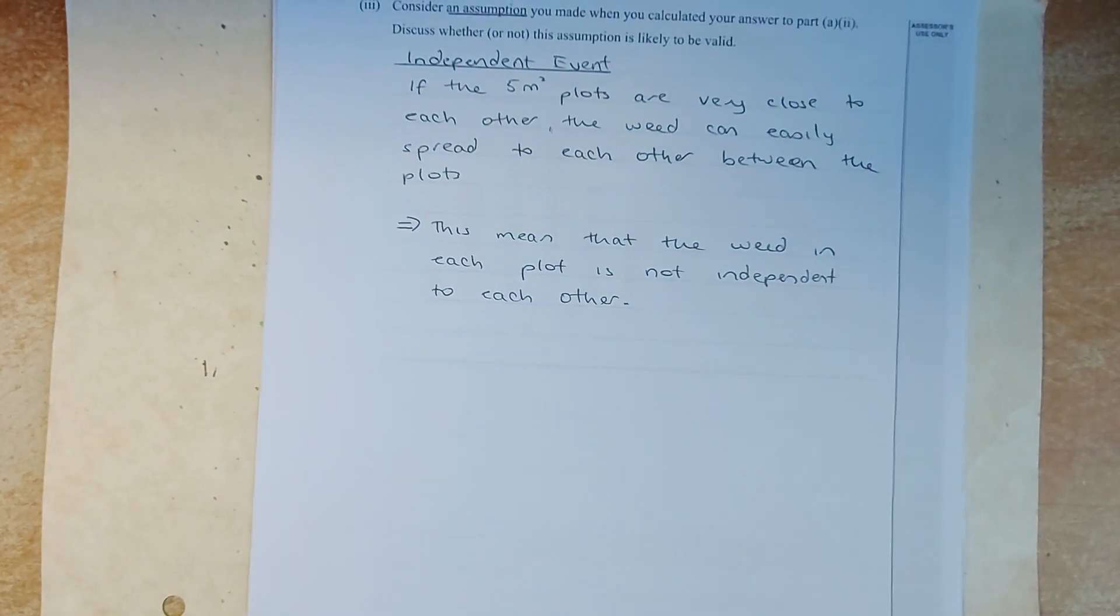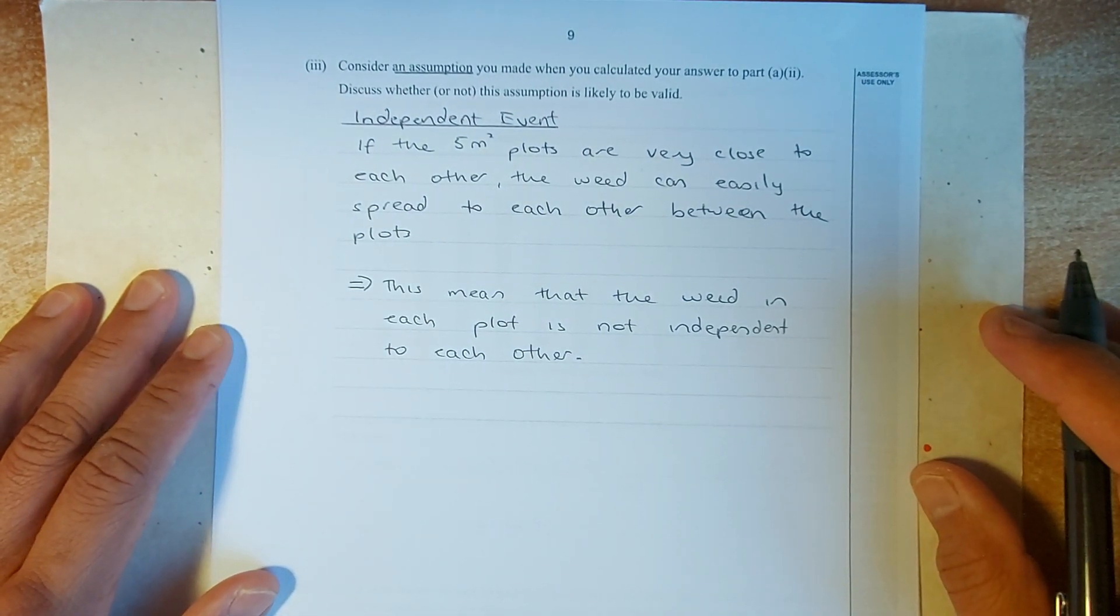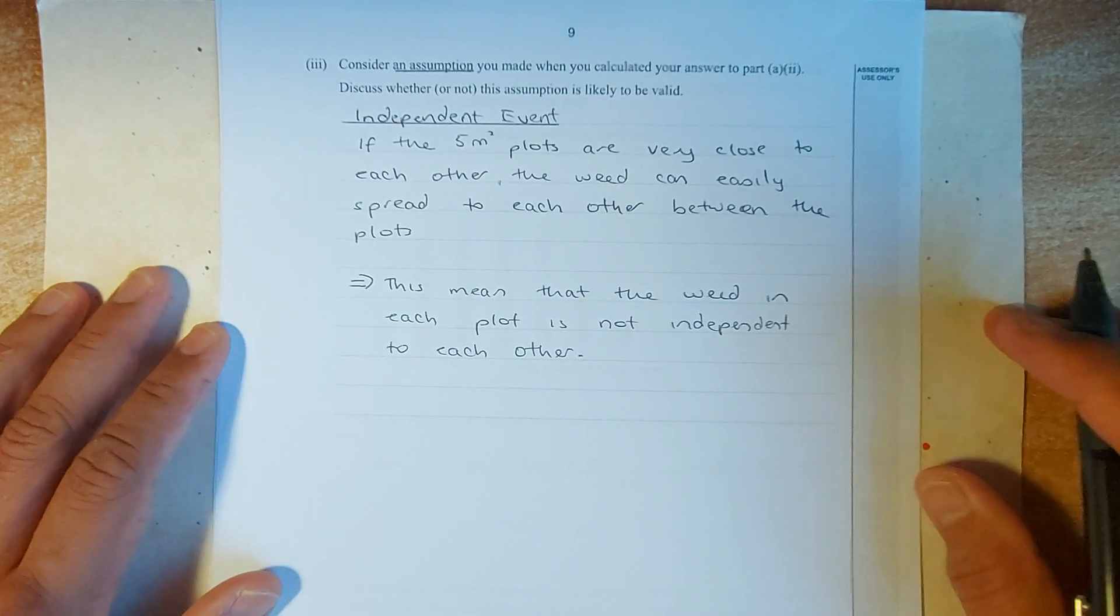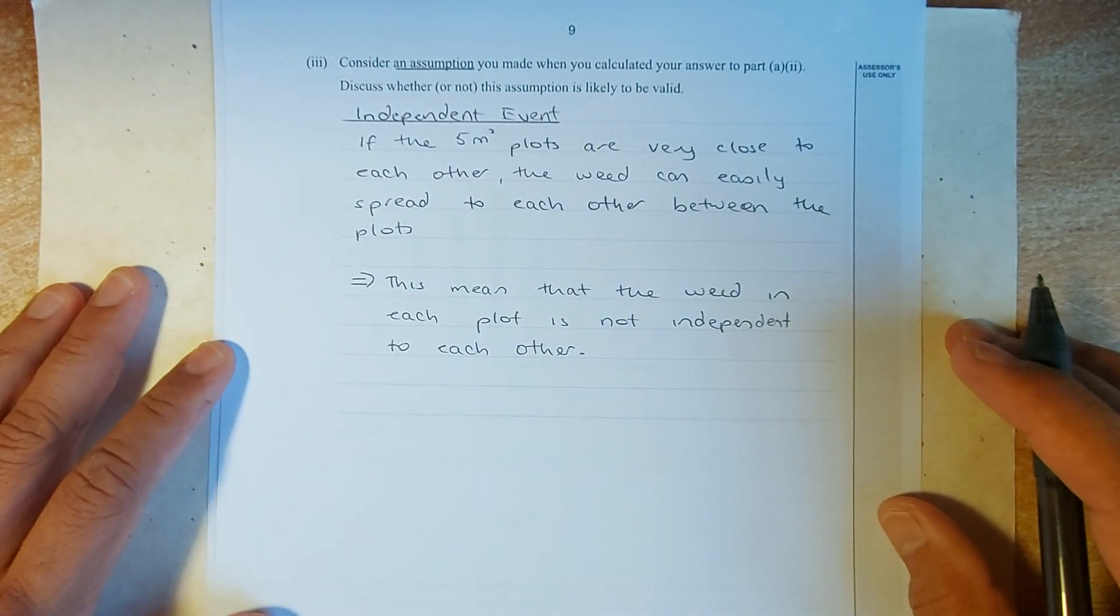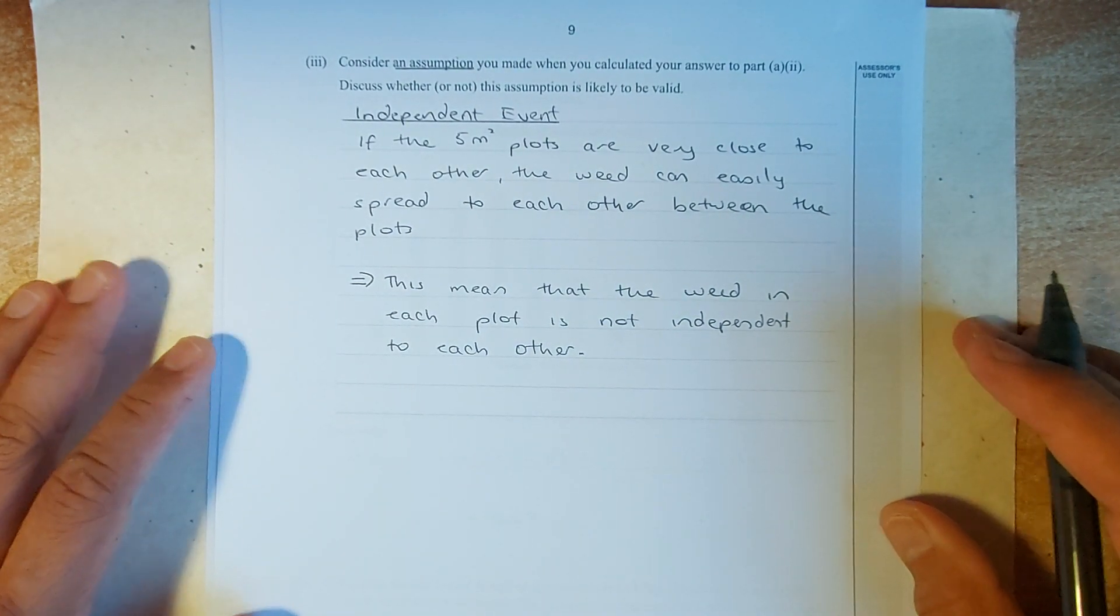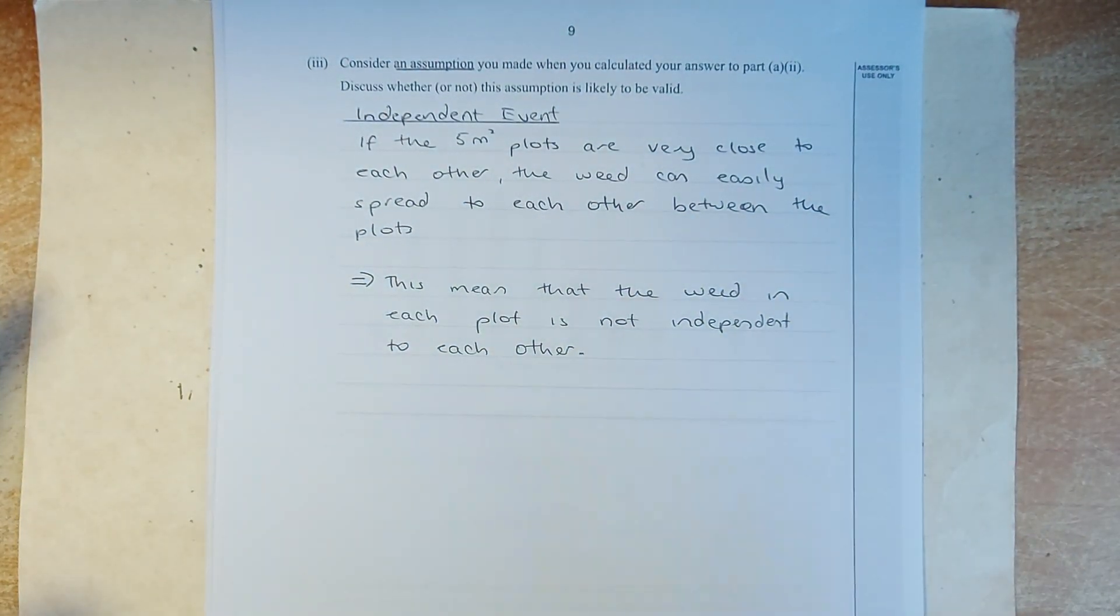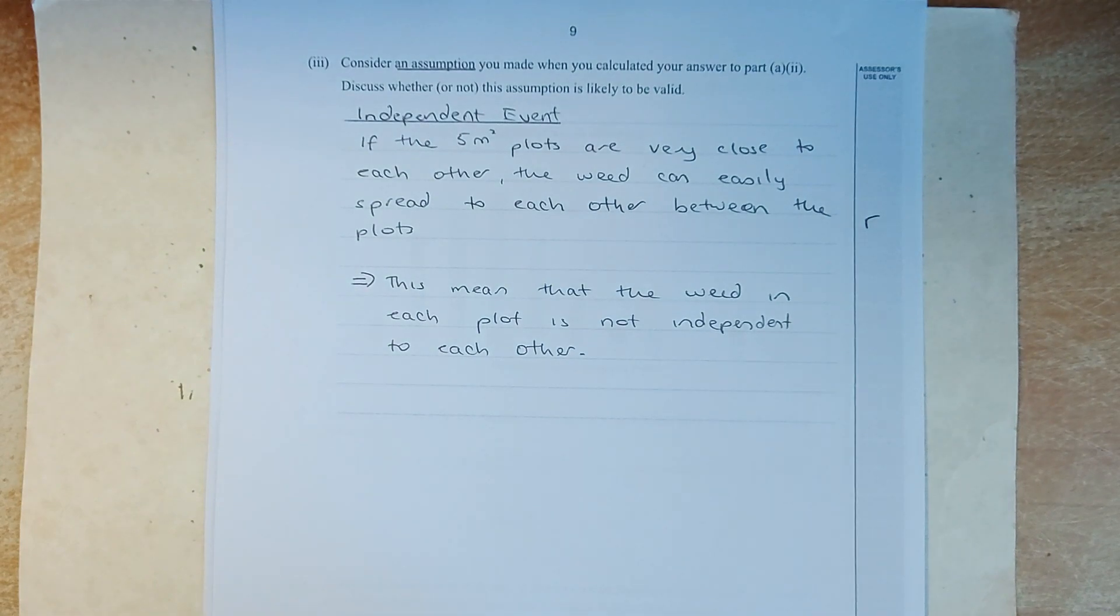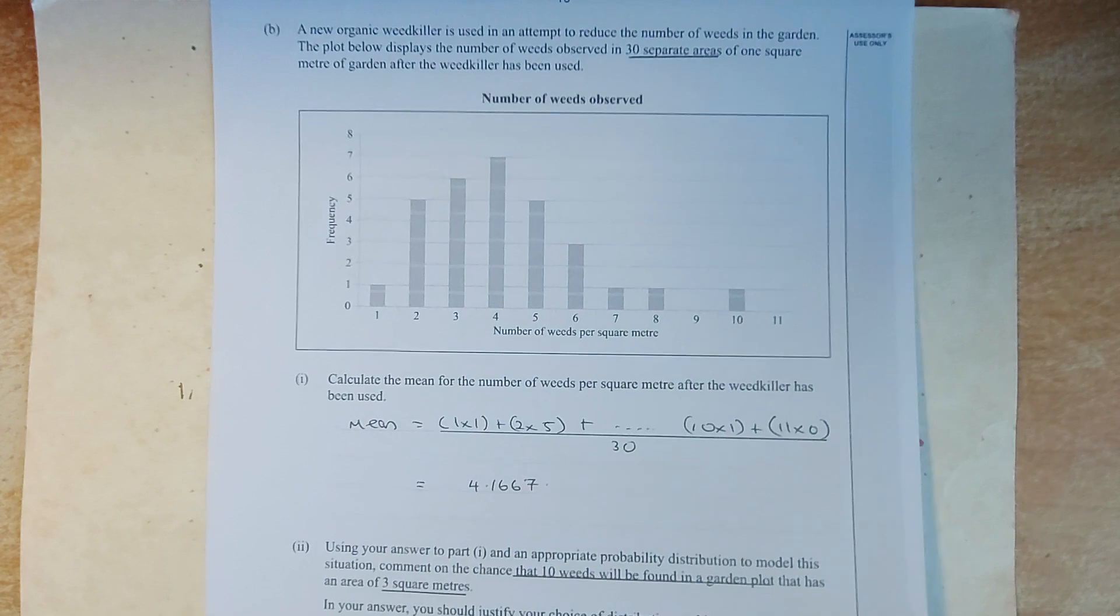Okay. So, consider an assumption you have made. Whether this assumption is likely to be valid. Okay. So, we are going to make an assumption that they are independent events. If the 5 meter plots or the 5 different plots are put close to each other, the weed can easily spread to each other between the plots. That means that the weed in each plot is not independent of another. So, please remember that. If you are not sure, go to the marking schedule. And that is a better explanation to give you a merit. Okay. The last page.